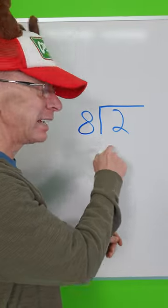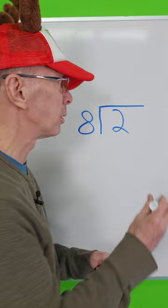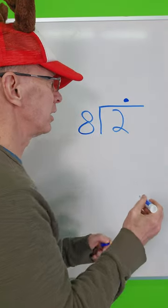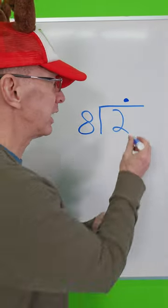Can I put 8 into 2? Can't do it. I need to put a decimal point, so I put the decimal point right there. If I put a decimal point here, that means I can add a zero.